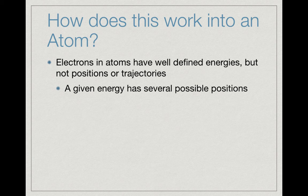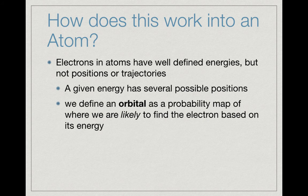An electron with a given energy has several different possible positions within the atom. So what we do instead is define a probability map of where we are likely to find the electron based on its energy. We call that probability map an orbital, and that's a term we'll use quite a bit during the rest of the course.